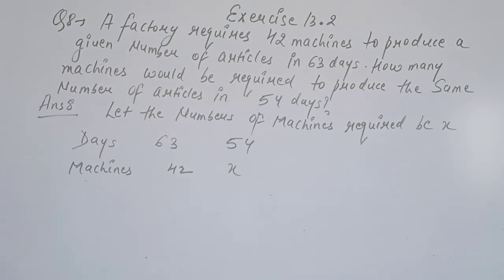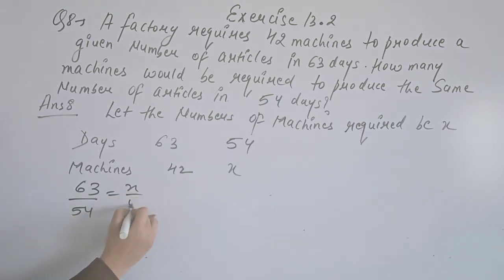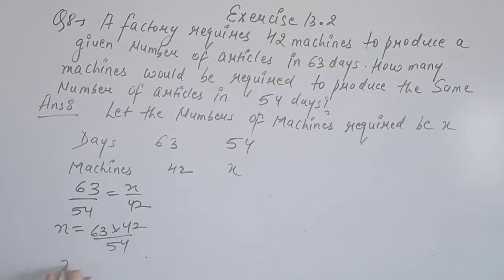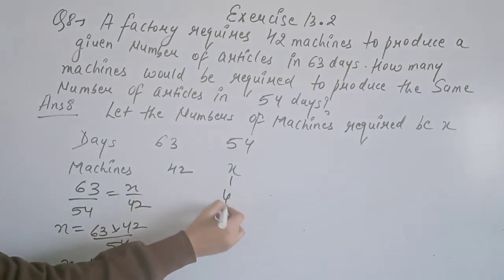This is inverse proportion, so 63 divided by 54 equals x divided by 42. We find x = 63 × 42 ÷ 54 = 49. So 49 machines would be required.